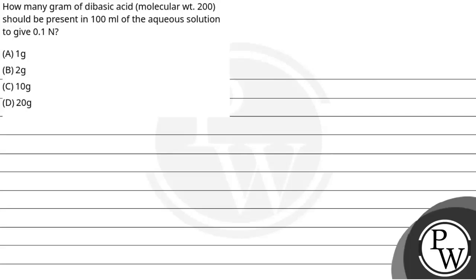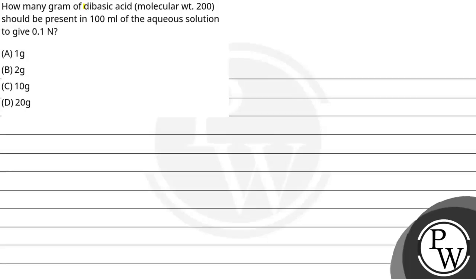Hello, let's see the question. The question is: how many grams of a dibasic acid with molecular weight equal to 200 should be present in 100 mL of aqueous solution to give 0.1 normality?